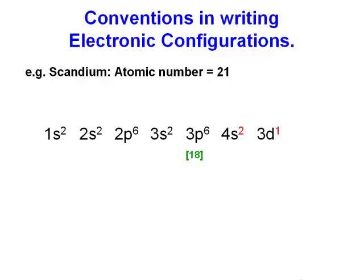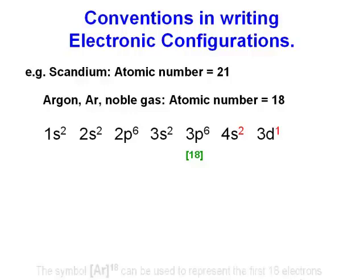The nearest noble gas to scandium is argon. Argon has an atomic number of 18, and so the symbol for argon can be used to represent the first 18 electrons of scandium. So here we have a shorter way of writing the electronic configuration of scandium.